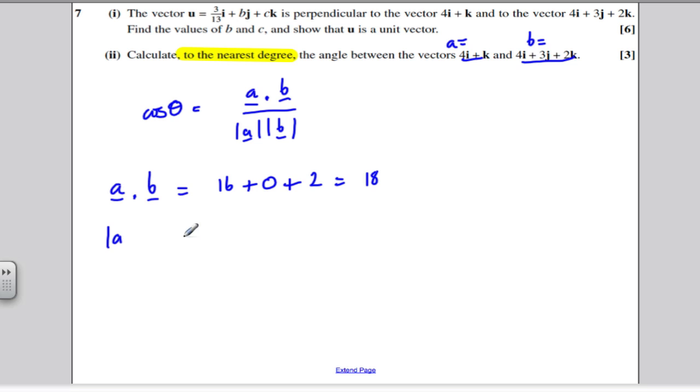What's the size of A? Well, it's the square root of 4 squared plus nothing squared for j plus 1 squared. 16 plus 1 is 17, so this is the square root of 17.